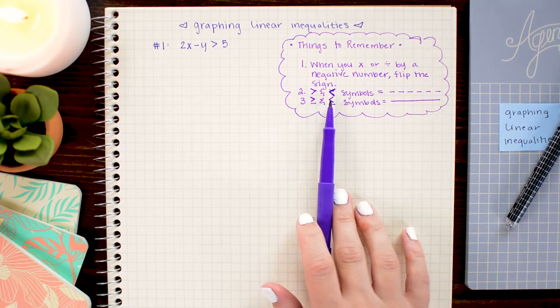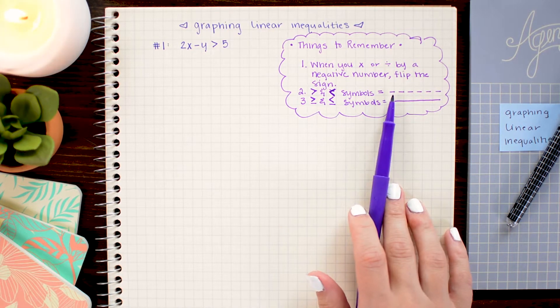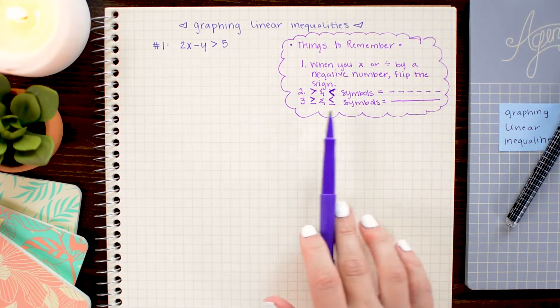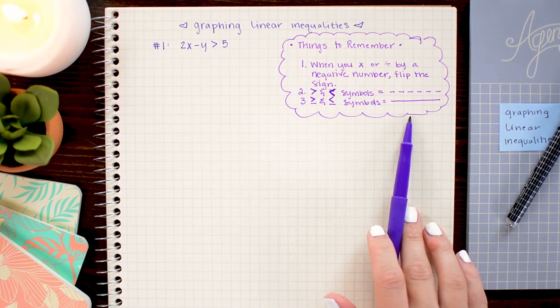Two, the greater than or less than symbols always translate into dashed lines when you graph. And the greater than or equal to and the less than or equal to symbols translate into solid lines when you graph.